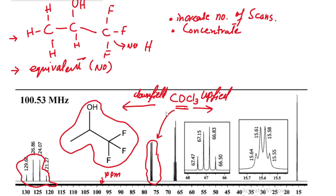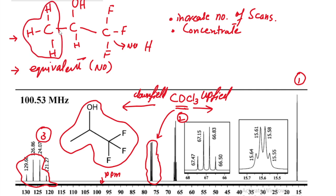There are three different types of carbons so three different types of signals will appear in the spectrum. The first signal, the second, and the third — and this additional signal is from CDCl3. This signal here is from the CH3 group. There are three protons attached to this carbon and they will give a multiplicity of 3 + 1 = 4, so it gives us a quartet.